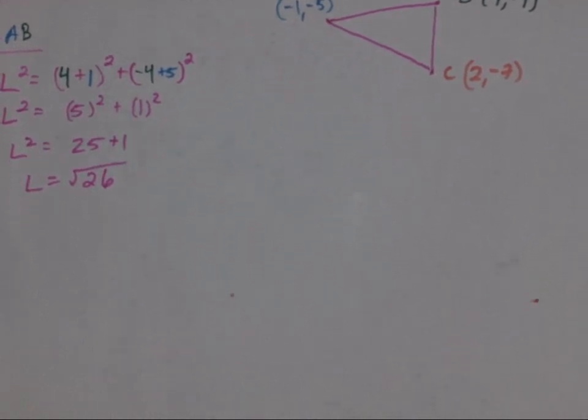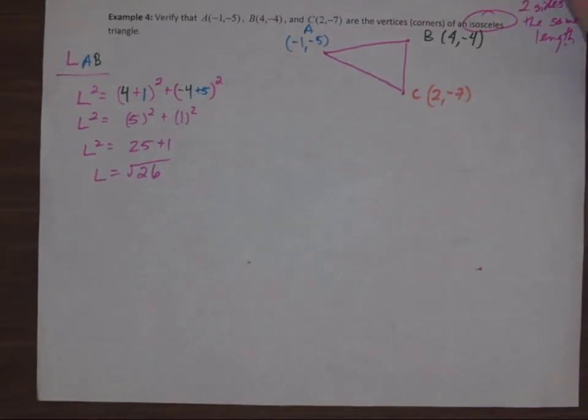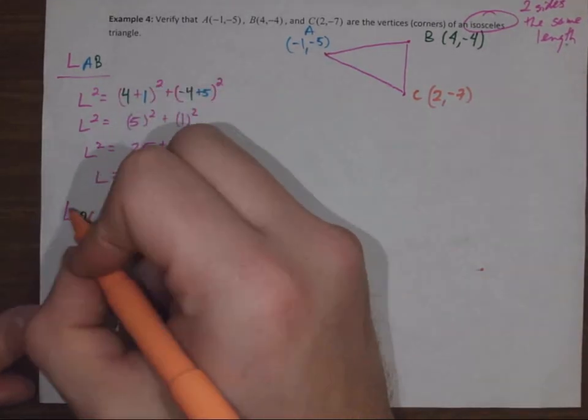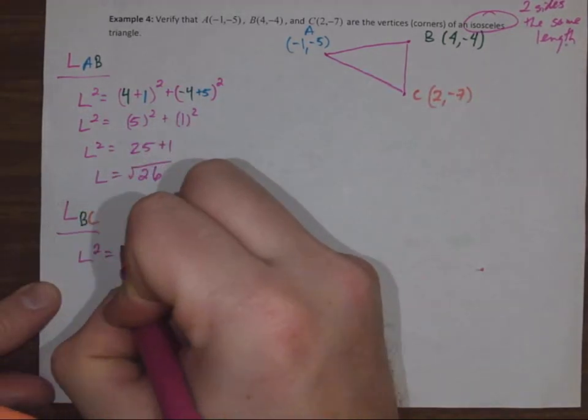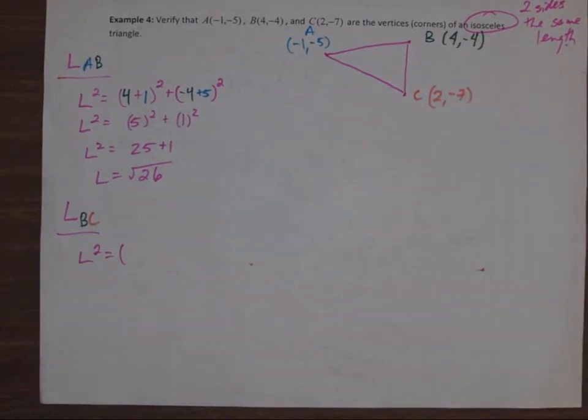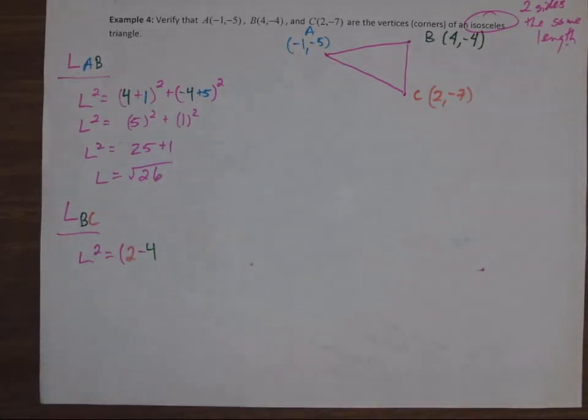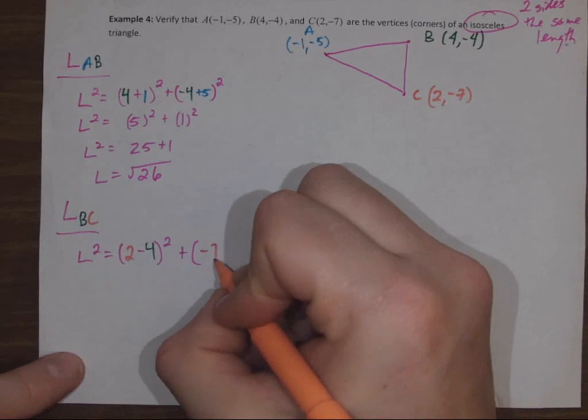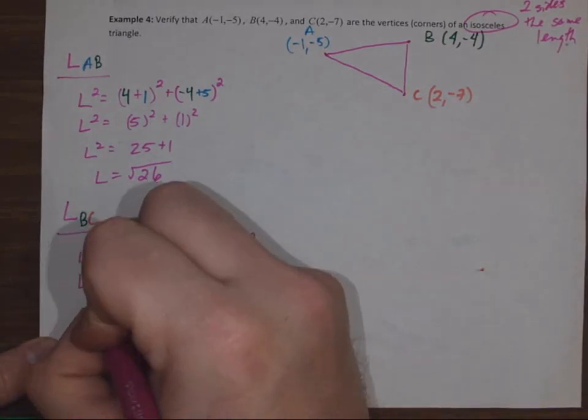I'm going to now find the length of BC. Use the formula again, it's given to you. So two take away four, all squared, plus negative seven take away negative four, which is add four, all squared. Math it out.